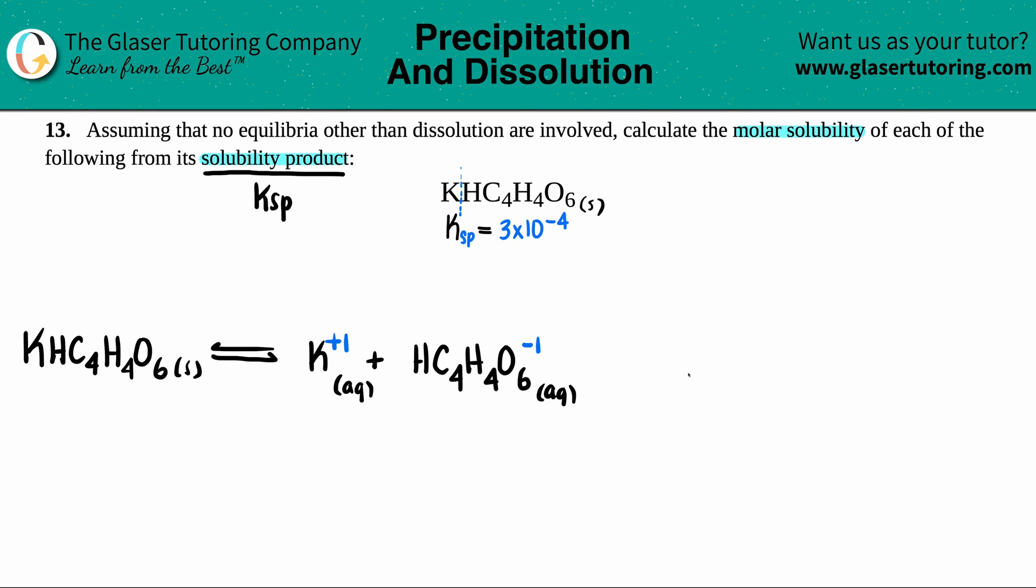So we're going to use the balanced equation to write out the general Ksp formula for this equation. Remember, the general Ksp formula is the concentration of the products raised to the coefficients. We don't care about the reactants because the reactants are always going to be solids starting off when you have a Ksp. And solids are not allowed in the Ksp formula.